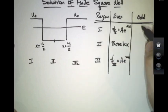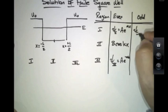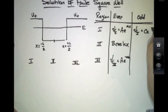The odd solutions, psi 1, would be c e to the alpha x, but then psi 3 would equal minus c e to the minus alpha x.